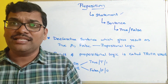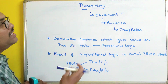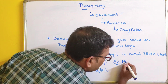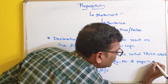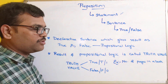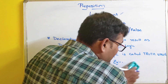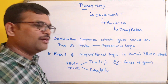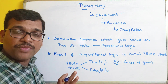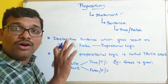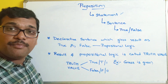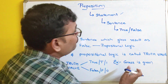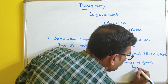So any sentence which gives exactly either true or false can be called as a propositional statement. For example: 'Grass is green.' This is a sentence, and we have to know whether it is a propositional statement or not. When we say it is a propositional statement, it must give a result of true or false. 'Grass is green' — that's true. So this comes under the propositional statement.